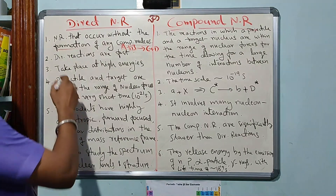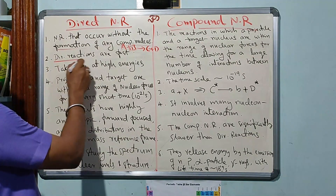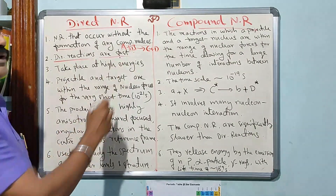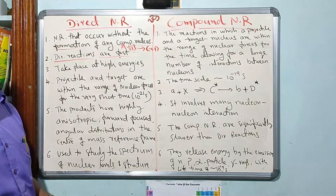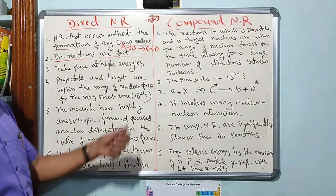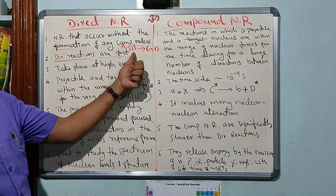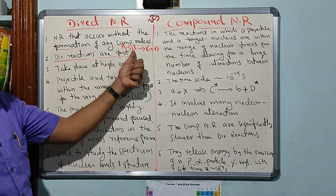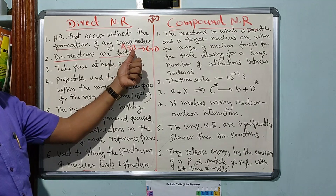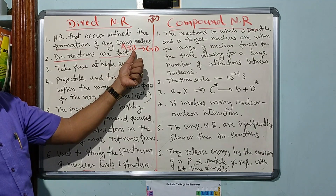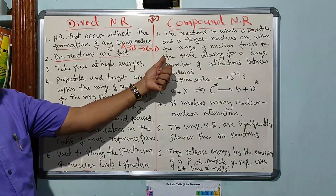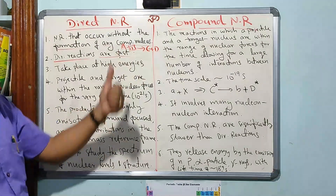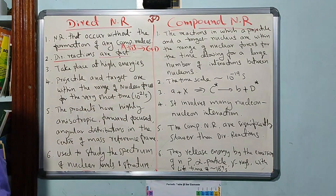The second point is that direct reactions are fast. They occur very fast with the help of the incident projectile. B is the projectile here. With the help of the incident projectile, the products are immediately formed — they are very fast reactions.